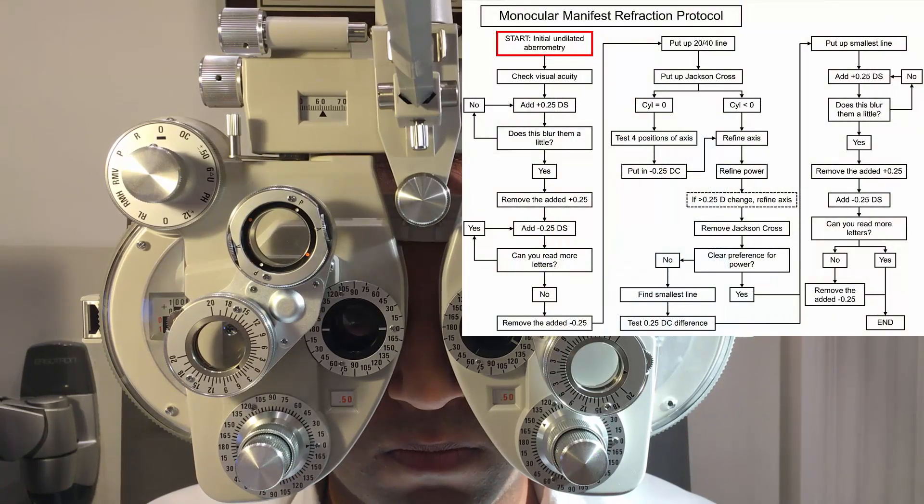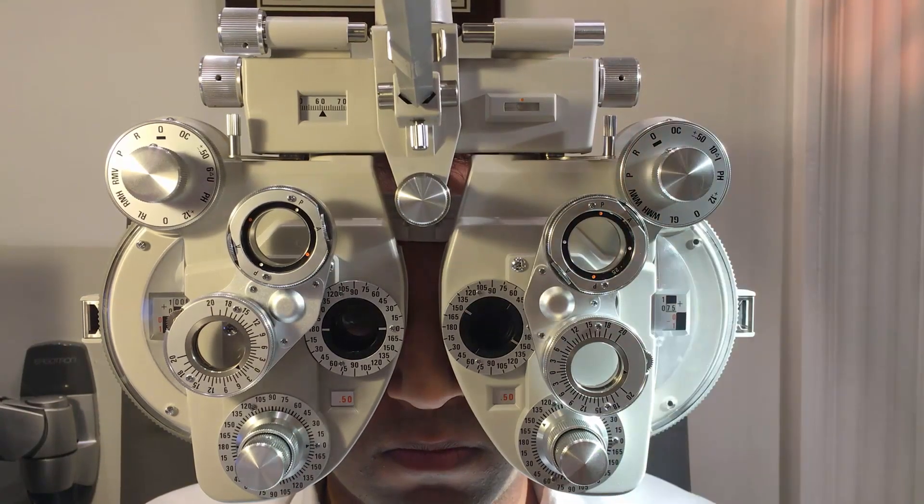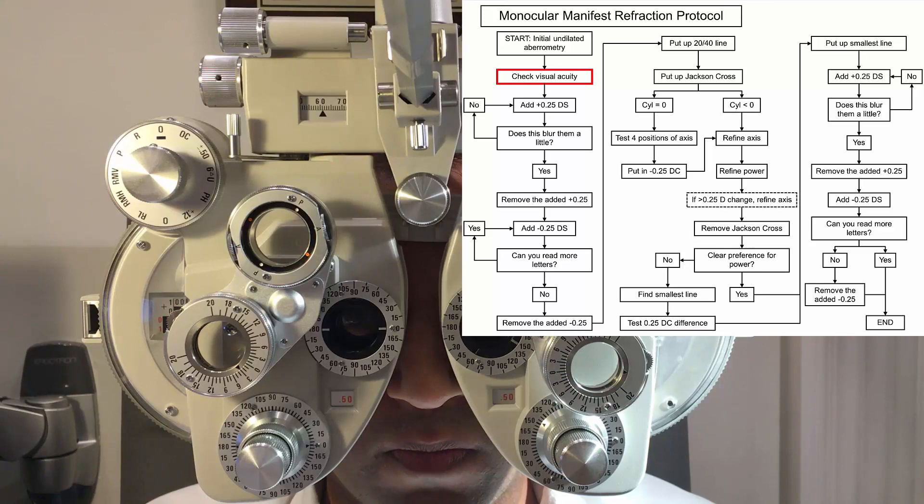Okay, so we've put up the autorefraction or the aberrometric refraction or the retinoscopy. The base refraction, we're going to just close the left eye. How far down can you see there off the bat? S, Z, R something, N.